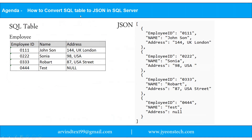Today's agenda is how to convert a SQL table to JSON in SQL Server. We will create an employee table with columns employee ID, name, and address, insert some records, and then convert this table into a JSON object — which is an array type containing objects inside.